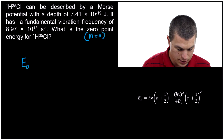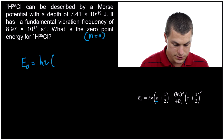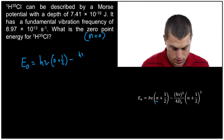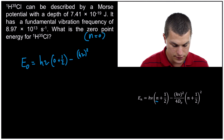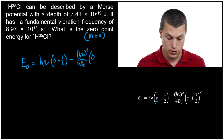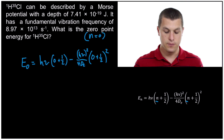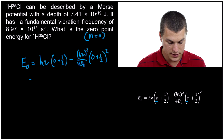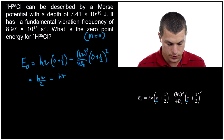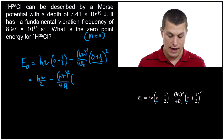To get the n equals zero state, we plug zero into our energy equation. E of zero gives us h times nu times (zero plus one-half), and then we subtract the second term: h times the frequency squared over four times dE, times (zero plus one-half) squared. Since zero plus one-half is one-half, and one-half squared is one-fourth, we can simplify. The energy becomes h·nu over two, minus h·nu squared over 16·dE.